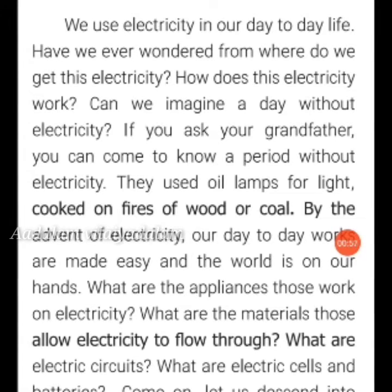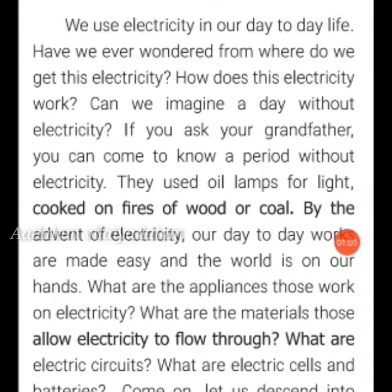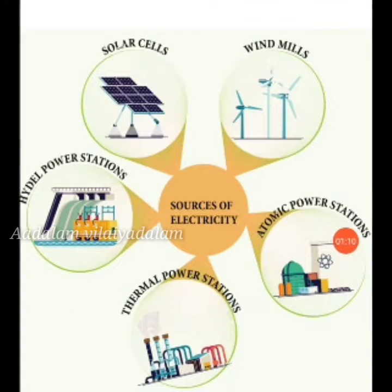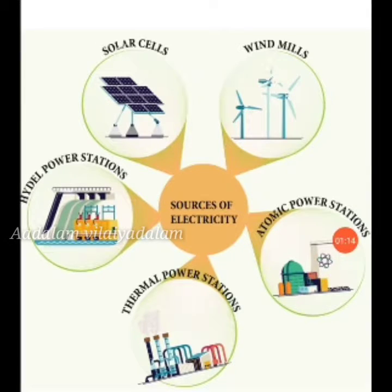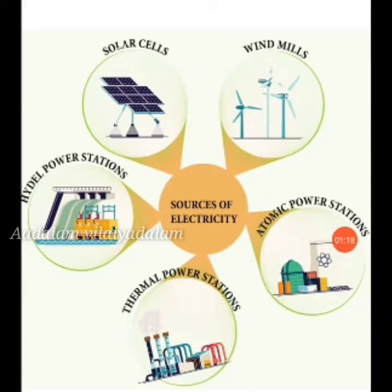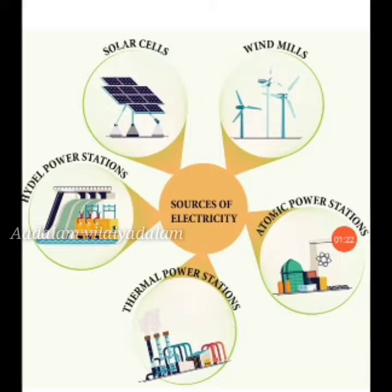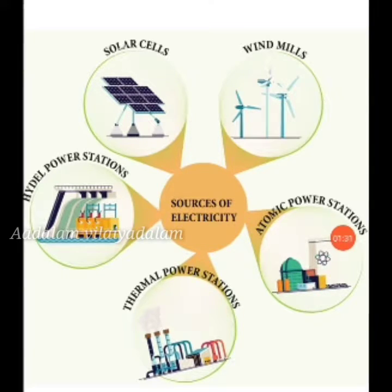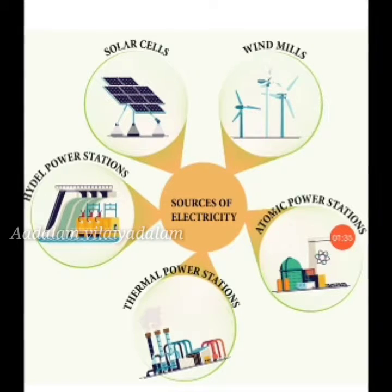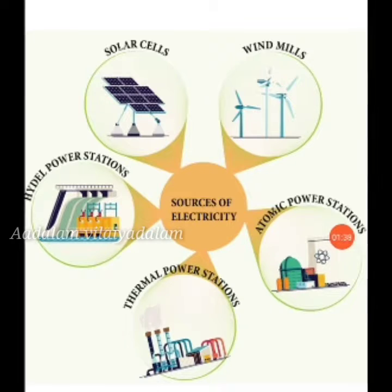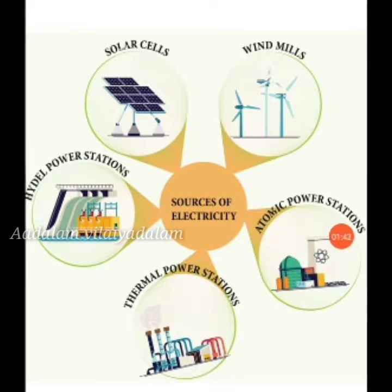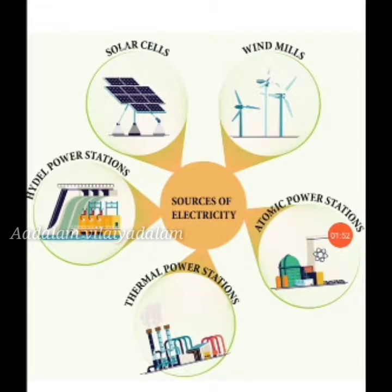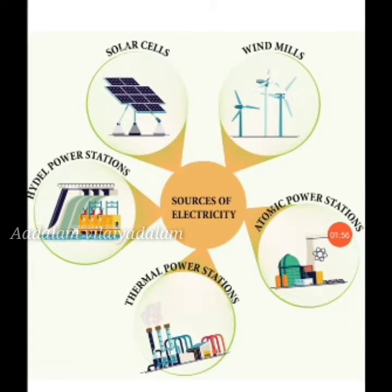Our first topic is sources of electricity. How does an electric bulb light up when we switch on the switch? Due to electricity. We get electricity from thermal power, hydel power, tidal power, wind power, and solar power. Any device from which electricity is produced is called a source of electricity. The sources include thermal power stations, atomic power stations, windmills, solar cells, and hydel power stations.